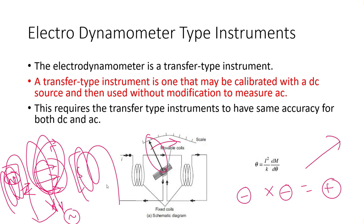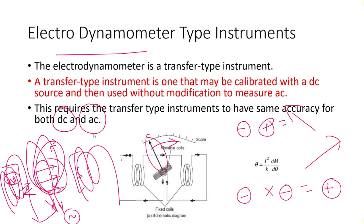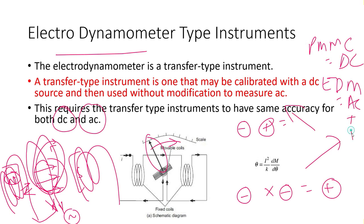In a PMMC, if the direction changes, one field stays constant and the other reverses, so the needle oscillates. In the electrodynamometer (EDM), both fields reverse together, giving a consistent direction. Therefore, PMMC is used for DC only, while EDM works for both DC and AC. This concludes the chapter on electromechanical instruments.